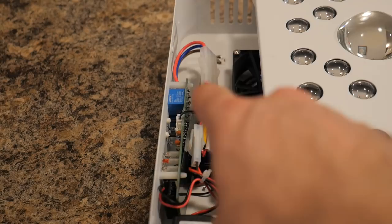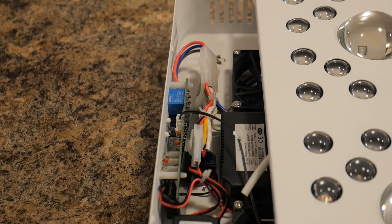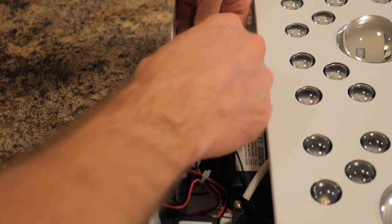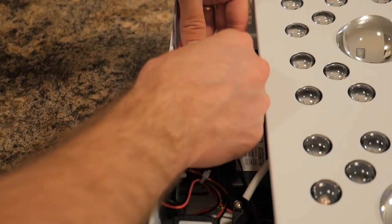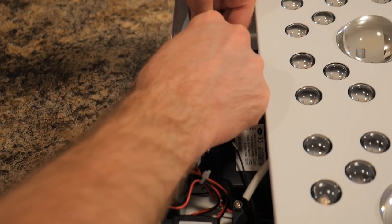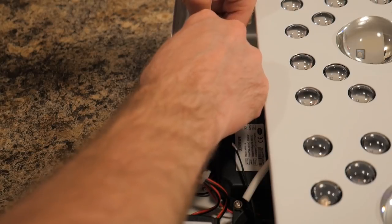So first thing we need to do is unplug all the attachments so let's get to it. I see there's three things you got to push down - two on the side and one on the back. Should just pop right out.